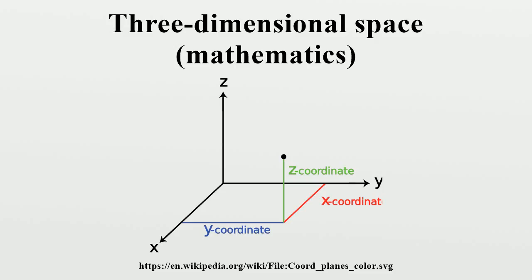In topology, three-dimensional space has a number of topological properties that distinguish it from spaces of other dimension numbers. For example, at least three dimensions are required to tie a knot in a piece of string. With the space, the topologists locally model all other three manifolds.